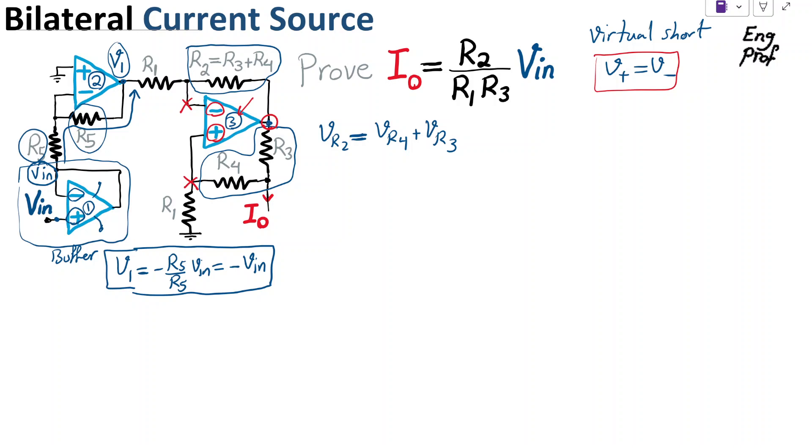So that is because the way things are set up. So as a result, I can substitute for these things. For VR2, I can substitute, of course, R2 times I2, which I'm supposed to find. For VR4, I can say R4 times I4, which I will find. I4 is the current that is passing through R4.